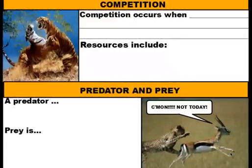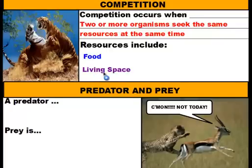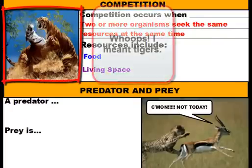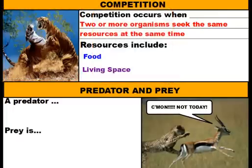So the next interaction we're going to talk about is competition. Competition occurs when two or more organisms seek the same resources at the same time. So some of these resources include things such as food or living space. For example, if we take a look at this picture here, we have two lions battling it out. So perhaps they want to live in the same territory because the territory provides enough food, enough protection, enough water, all the things that it needs to survive.